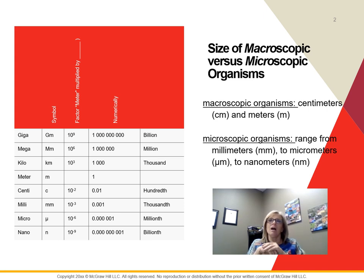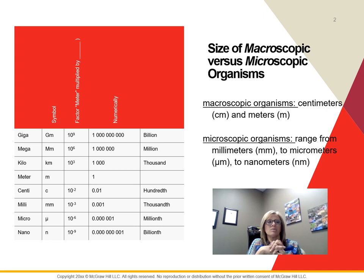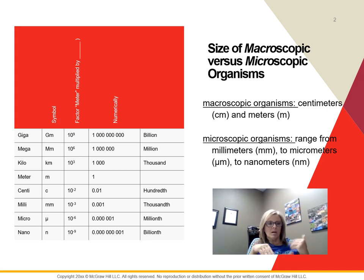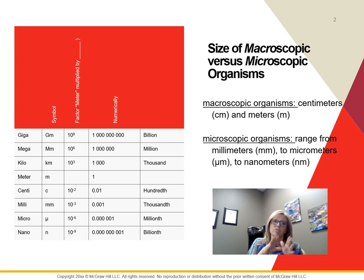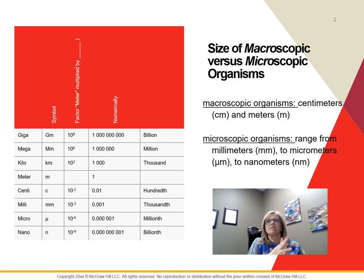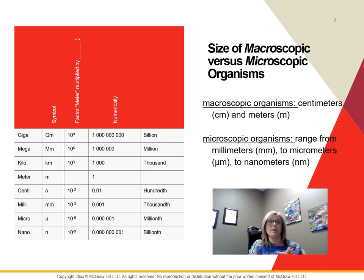Things like worms are going to be macroscopic, having part of their particular life cycle in the microscopic form. That's centimeters to meters. Our microscopic organisms can go from millimeters all the way down to micrometers or nanometers.